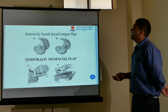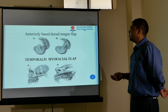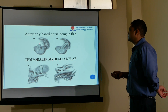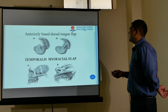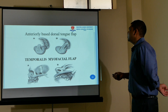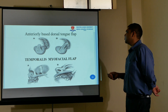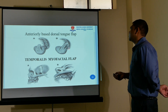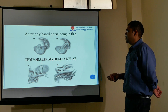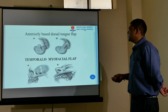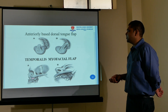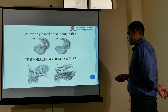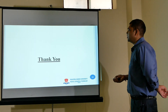A tongue flap can be taken and rotated and placed into the defect, though this is a very difficult flap due to tongue mobility compromising the blood supply. The temporalis fascial flap involves taking the temporal muscle and suturing it to the fistula site.